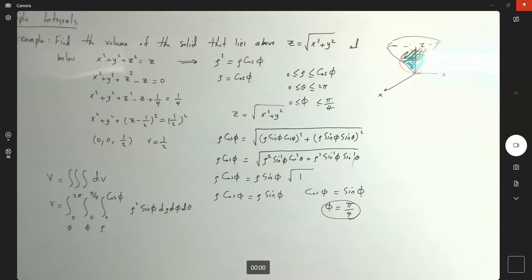So let's see. Do we have any connection between theta, phi and rho? No. So I can separate these. Zero to two pi d theta. What about this? Well, there's a connection between these two, so I'm going to do the computation separately. Integral zero to pi over 4, and here I have rho squared, which becomes one third rho cubed. I have sine phi and zero to cosine phi, and here I have my d phi.